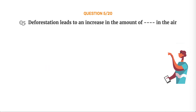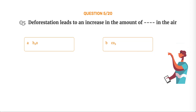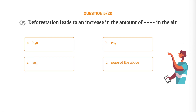Question number 5. Deforestation leads to an increase in the amount of dash in the air. Option A, H2O. Option B, CO2. Option C, SO2. Option D, None of the above.